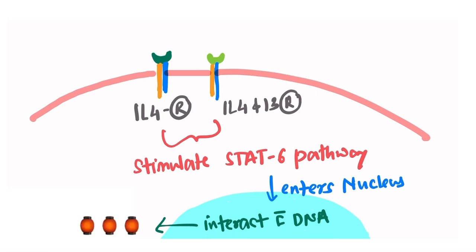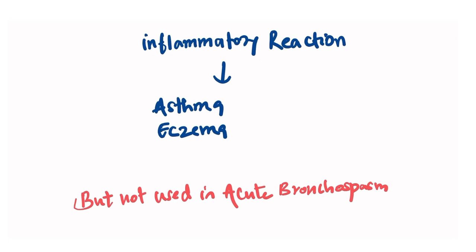And then there is release of certain proteins. These proteins are responsible for the inflammatory reaction which then leads to exacerbation of asthma and eczema. So in such situations we give this drug which blocks the interleukin-4 and there is no such reaction. But it is important to note that it should not be used in acute bronchospasm.